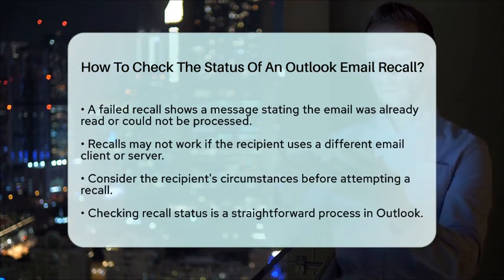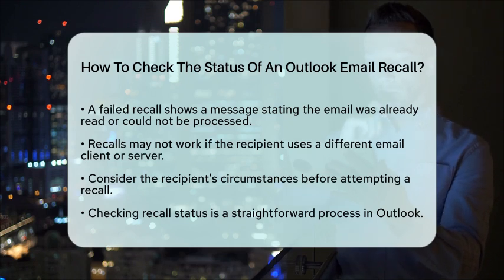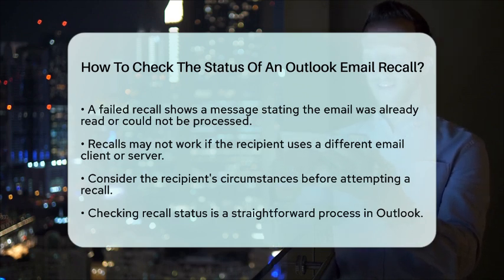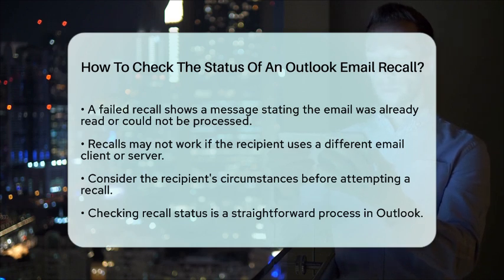In conclusion, checking the status of an email recall in Microsoft Outlook is a simple process that involves reviewing the original sent email in your Sent Items folder. By following these steps, you can stay informed about the fate of your email and take appropriate actions if necessary.